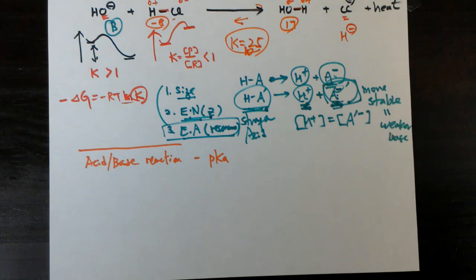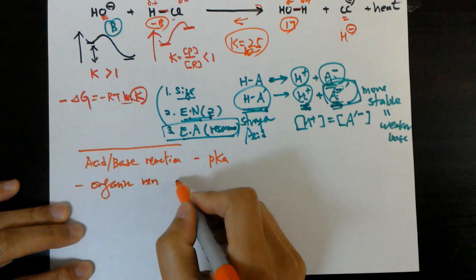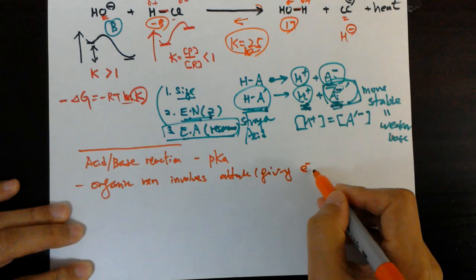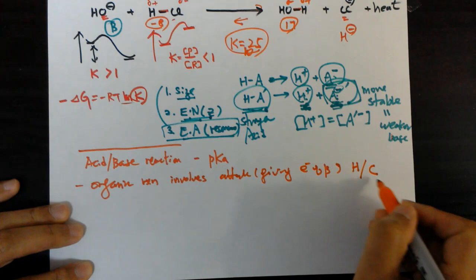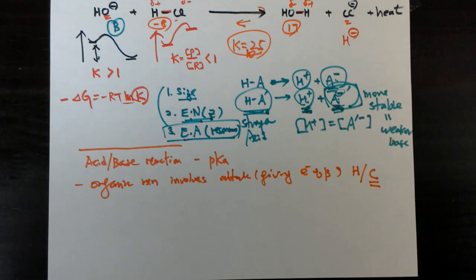Although organic reactions don't always attack hydrogen, organic reactions involve attack — meaning giving electrons from the base to the acid — which can be hydrogen but also carbon as well. Organic compounds have a complex structure due to carbon's ability to make multiple bonds and various structures by rotating around single bonds freely.